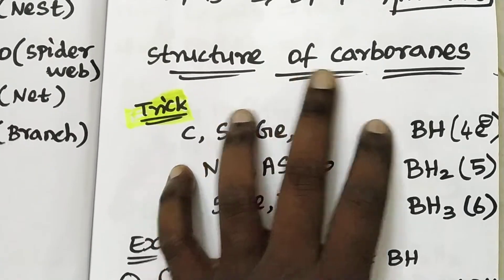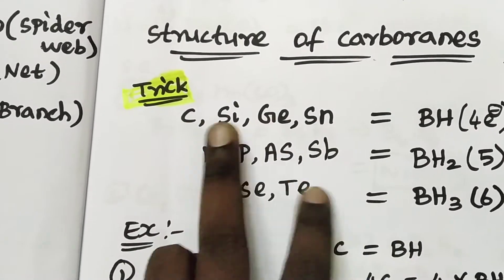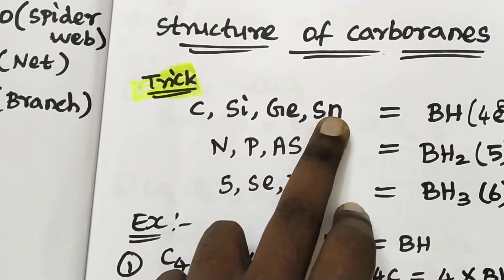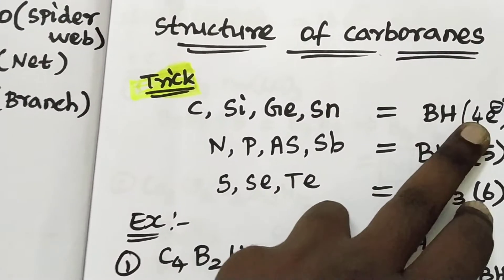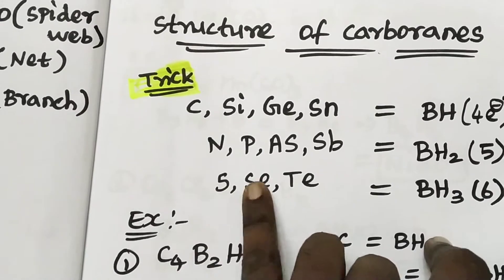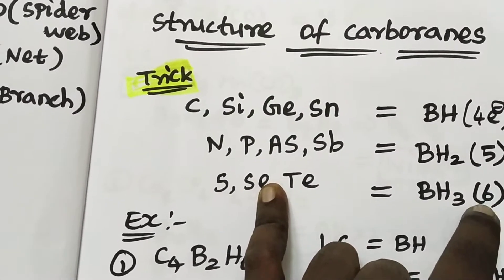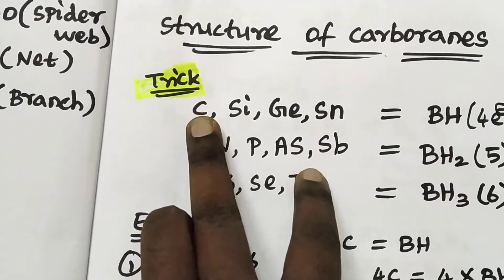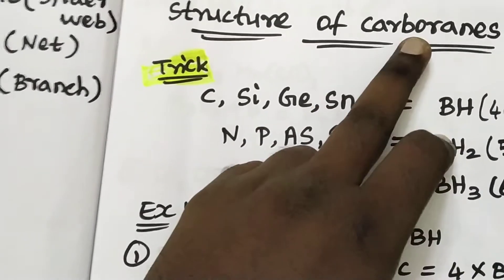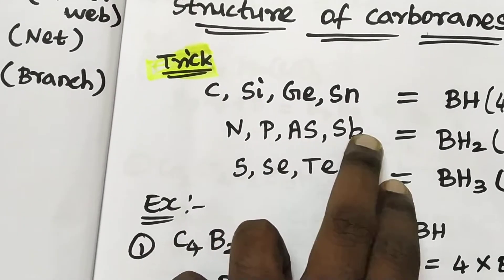For the structure of carborane, if you have carbon group elements — carbon, silicon, germanium, tin — their valence is 4. Nitrogen has a valence of 5, and oxygen has a valence of 6. These valence numbers are key to the calculation.